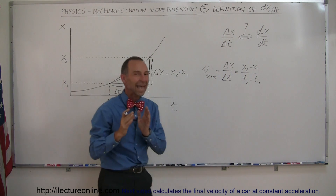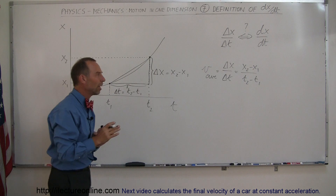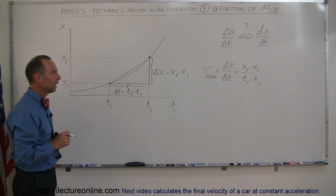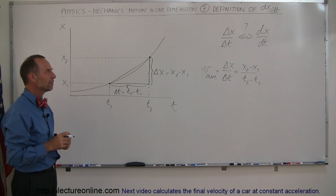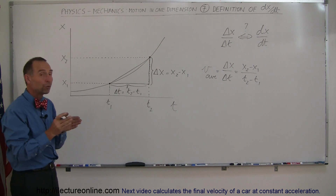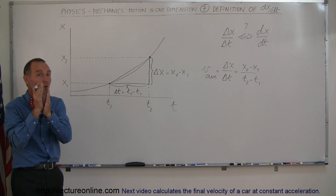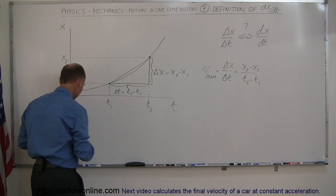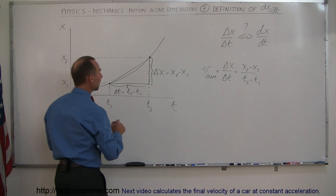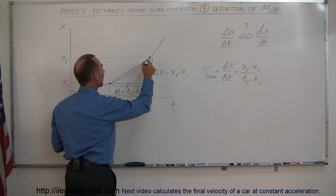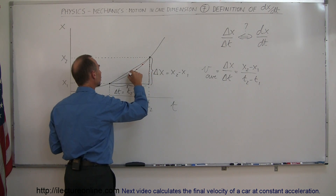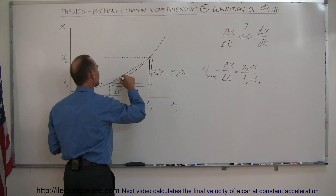So that simply represents the average velocity over that interval. Now what does dx/dt mean? Well, dx/dt means the same thing but over a much smaller interval. What we're going to do is slowly take this x2 and t2 and bring it in closer and closer.